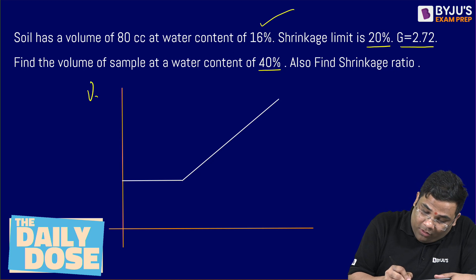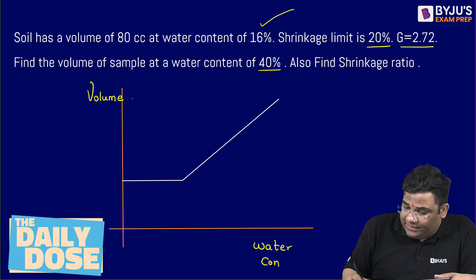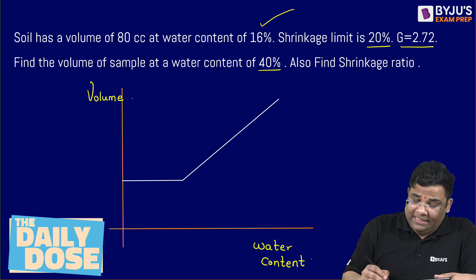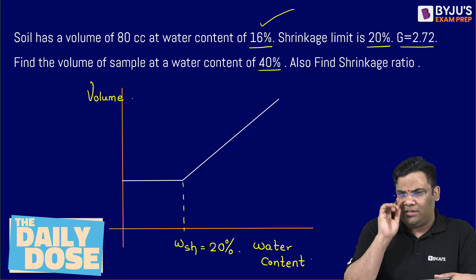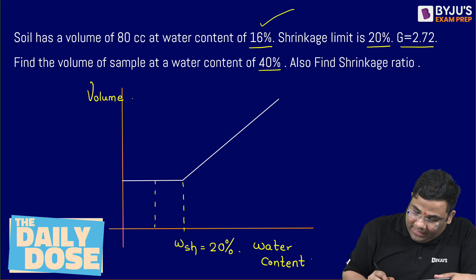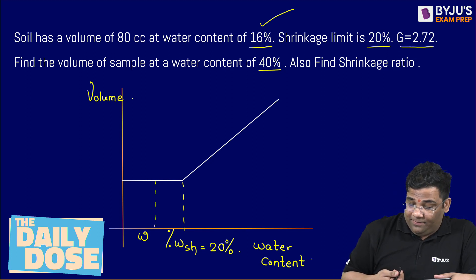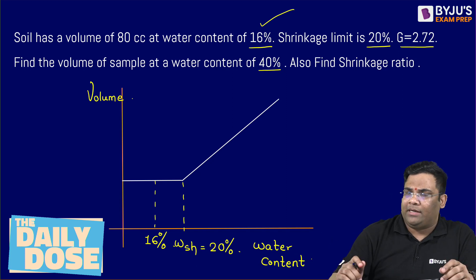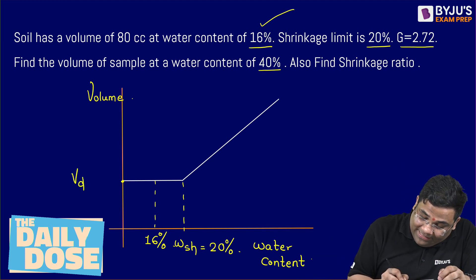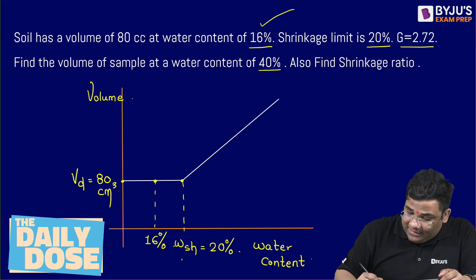First, let's look at the plot between volume and water content. In this plot, the shrinkage limit is marked, and the shrinkage limit is given as 20%. Now, at 16% water content, this value is less than the shrinkage limit, so it falls in the constant volume region. The volume is 80 cc. Below the shrinkage limit, the volume is constant — that is the dry volume. So this 80 cc is indirectly the dry volume, and that same dry volume will be maintained at the shrinkage limit as well.